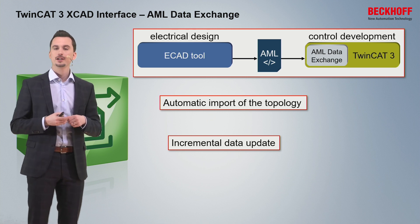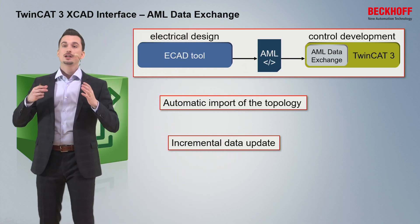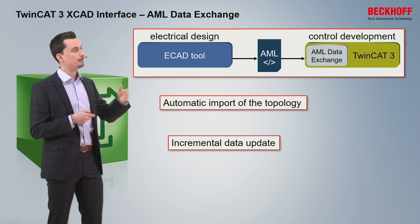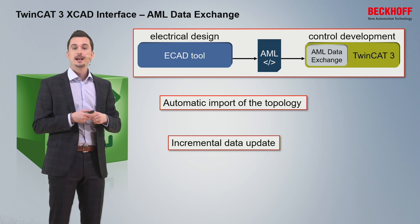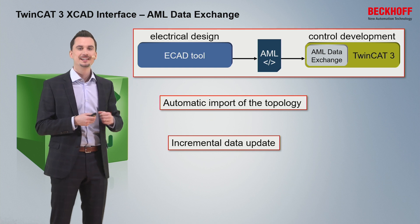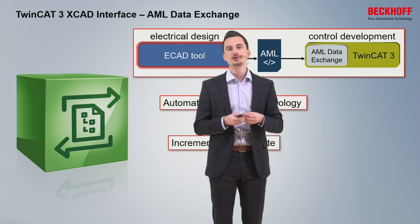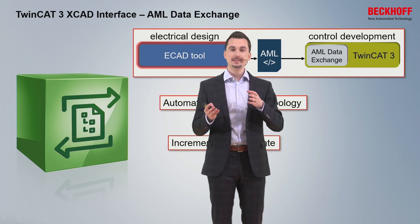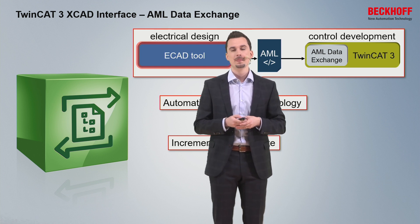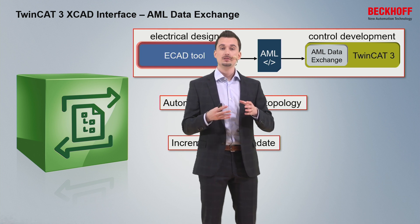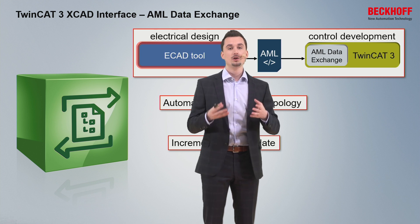So if we are in an early phase of the project, we can more or less parallelize the electrical design and the control development. We can export an early version of the IO topology and import it into TwinCAT 3, then continue working on both sides. When a second version of the IO topology is ready on the ECAD tool side, we can import it into TwinCAT 3, and the TwinCAT project compare tool is automatically started — enabling you to easily merge and compare the existing IO topology with the one being imported. Even if you have made changes to the existing IO topology in TwinCAT 3, you can save those changes and only import new or changed content.